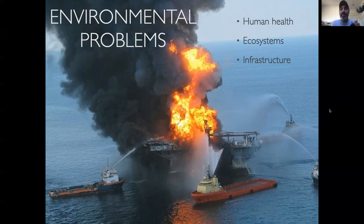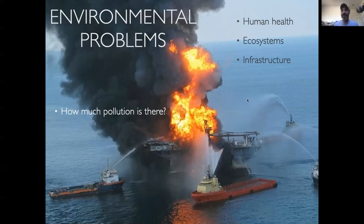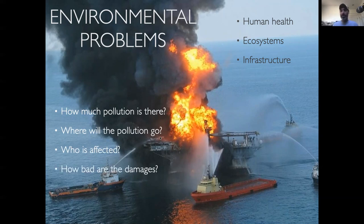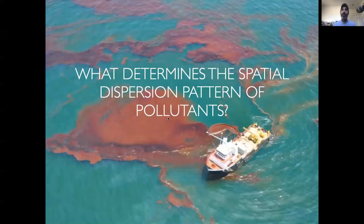Taking for granted that most listeners in this class are familiar with many environmental problems associated with pollution, I'll dive into some of the key questions we might have when trying to understand a pollutant: how much of it is out there in the ecosystem, where is it and where is it going, who's going to be affected, and what are the damages associated with any particular pollutant. From that wide range of questions, I'm going to distill them down into one core motivated question for this unit: what determines the spatial dispersion pattern of any particular pollutant?